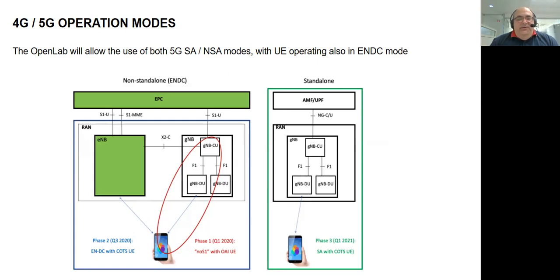The left part of the figure shows exactly that situation: user equipment camped on a gNodeB, which is connected via X2 interface to an eNodeB, and both base stations are controlled by the EPC, the 4G core network. On the right side of the picture, we have a standalone situation with a gNodeB and real user equipment. We are not going to use simulated smartphones — we are going to use real smartphones camped on 5G in standalone mode. So in our lab, we are going to have both situations.